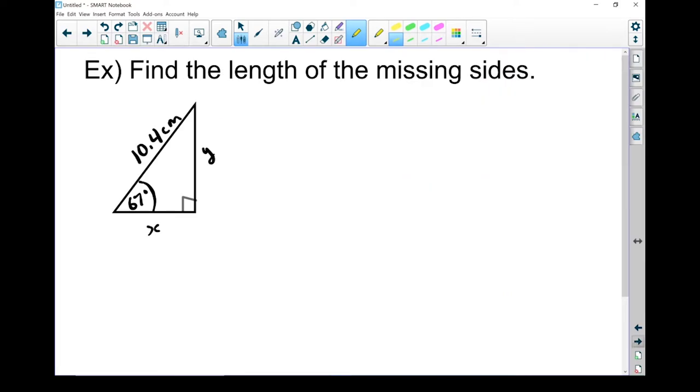All right, so here we have a triangle with two missing sides. And the question asks, find the length of the missing sides. This is essentially two questions mixed into one. We have an angle we're looking from and we're given one of the sides. Let's label the sides first.